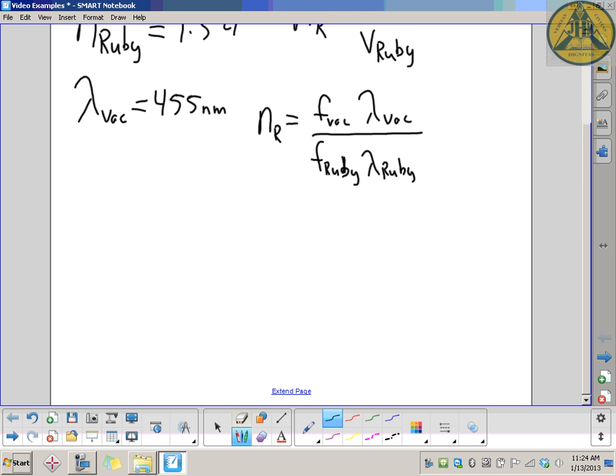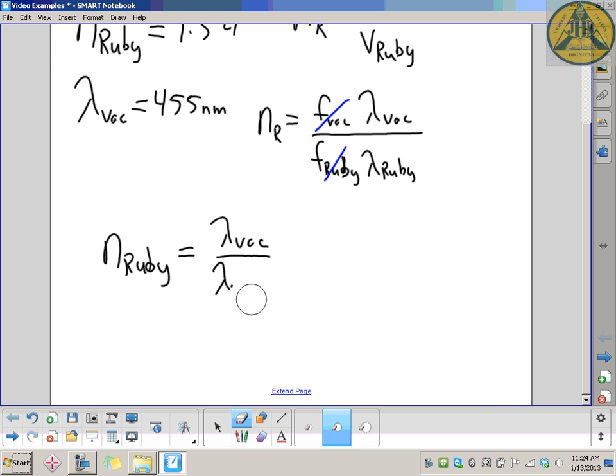If you remember what I just said, the frequency doesn't change as you go from one to another, so these two frequencies are exactly the same. When they divide, we're left with a simple equation: the index of refraction of ruby is not only a ratio of speeds, but also a ratio of wavelengths. Wavelength and speed slow down in ruby by the same factor, which is the index of refraction.